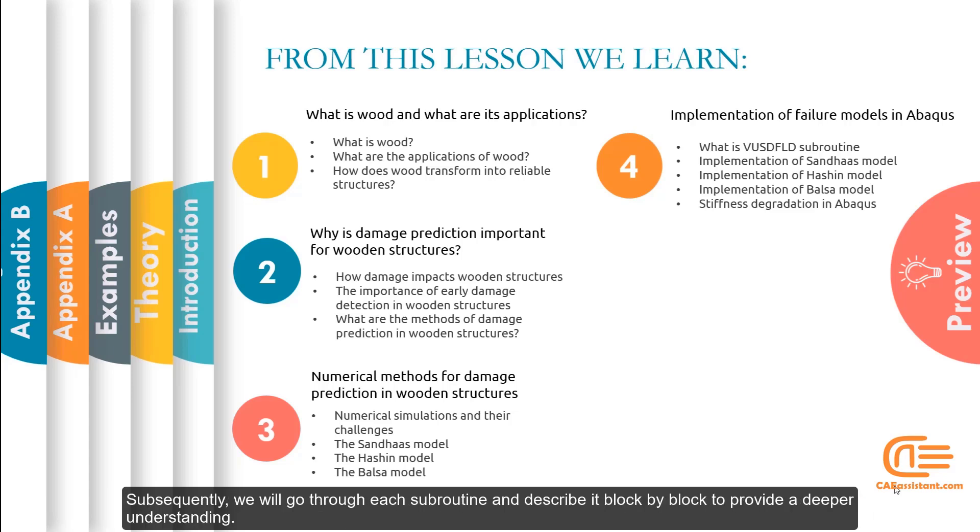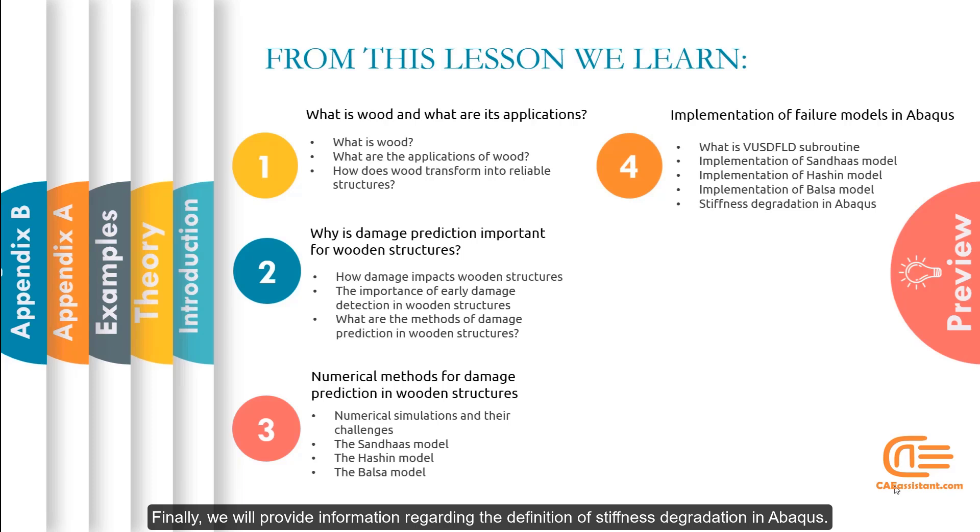Subsequently, we will go through each subroutine and describe it block by block to provide a deeper understanding. Finally, we will provide information regarding the definition of stiffness degradation in Abaqus. It enables us to reduce the stiffness of a failed material point and simulate the wood damage in Abaqus.